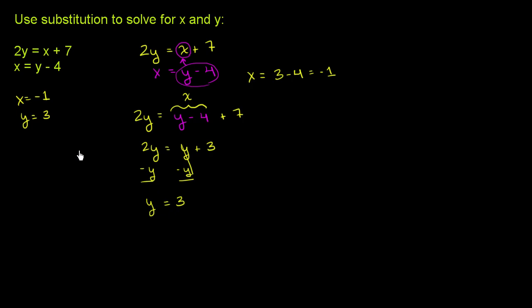Now I want to show you that here we had an equation that explicitly solved for x, so we were able to substitute the x's. But we could have done it the other way around — we could have solved for y and then substituted for the y's. We could have substituted from one constraint into the other, or vice versa. Either way, we would have gotten the same exact answer.